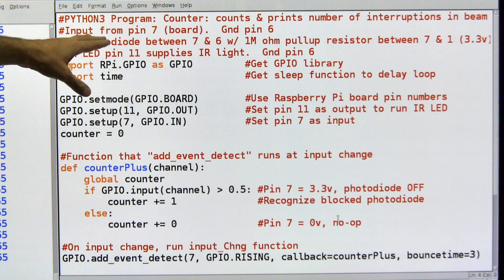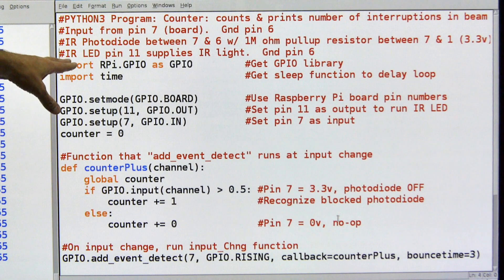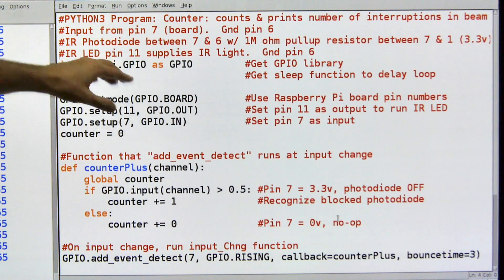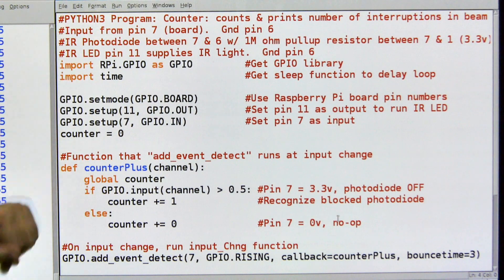My input is pin seven, and I used ground pin six. My IR photo diode is on pin seven, and I'll show you all this hardware at the end of the video. The infrared LED is on pin 11, and that's the thing supplying the light that the photo diode is going to detect.